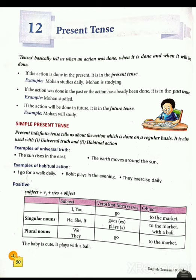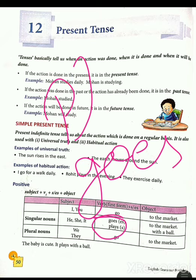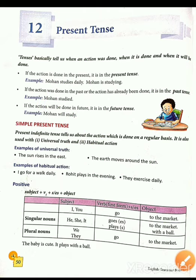For affirmative sentences: Subject + V1 (base form of the verb) + s/es + Object. Agar singular hai toh hum s/es ka use karte hain verb ki first form mein. He, she, it ke saath: base form 'go' mein s add karenge — goes. 'Play' mein s add karenge — plays. For example: He goes to the market. He plays with a ball.